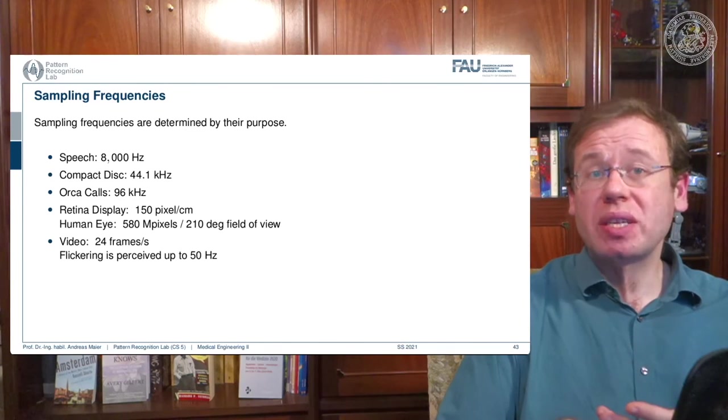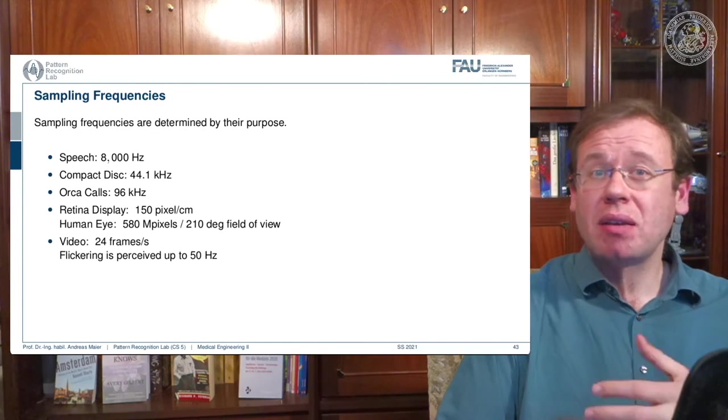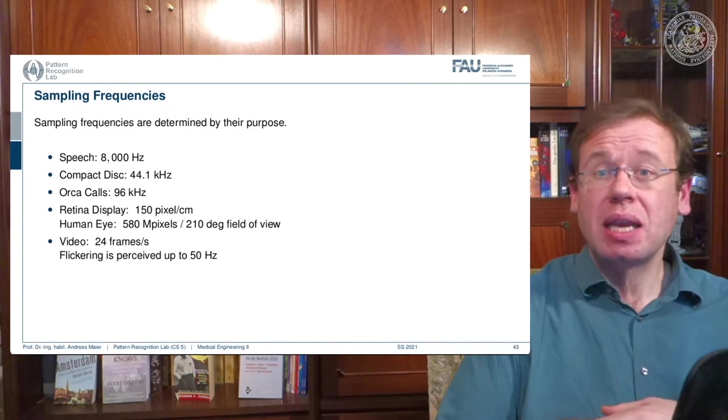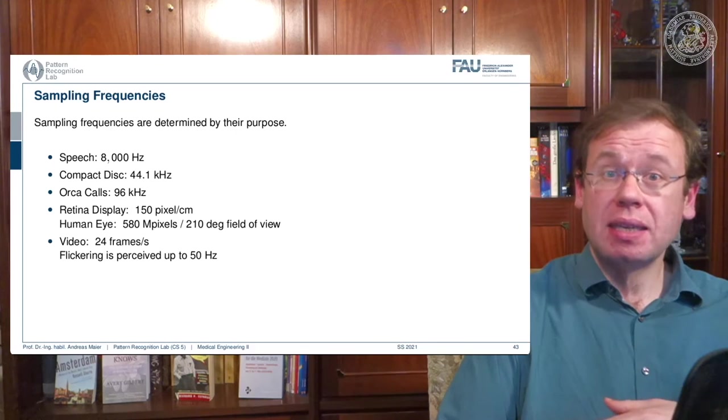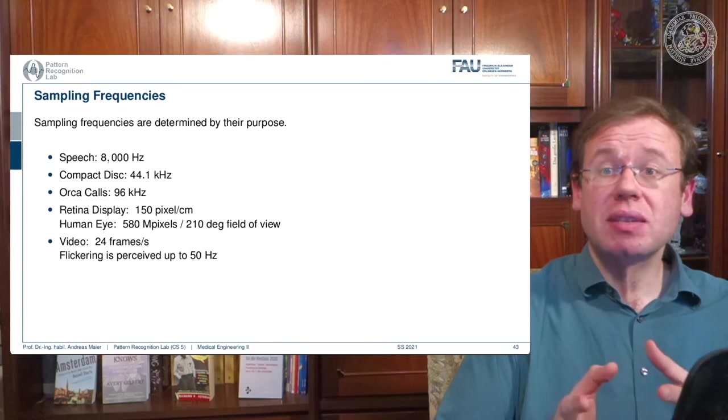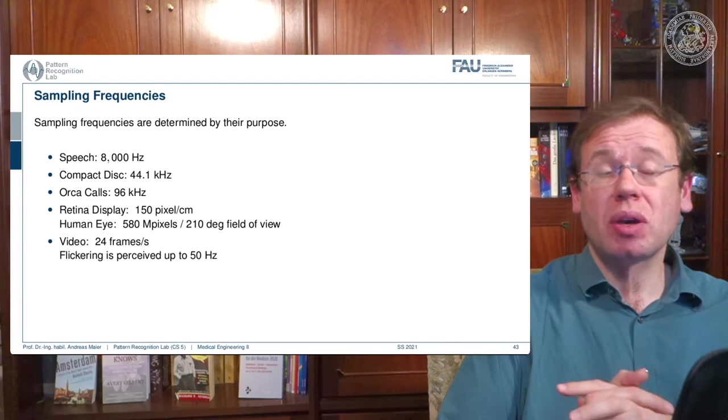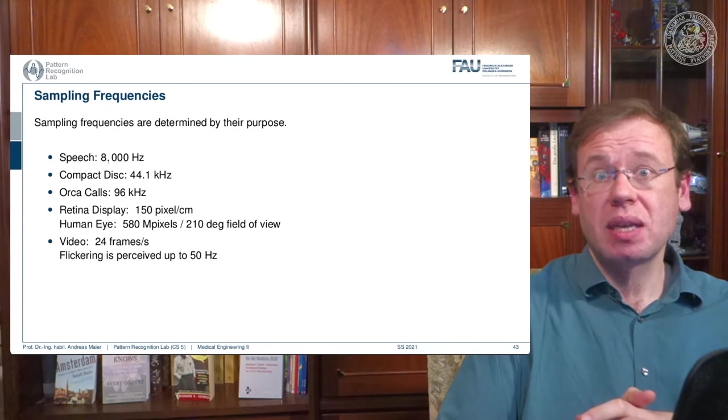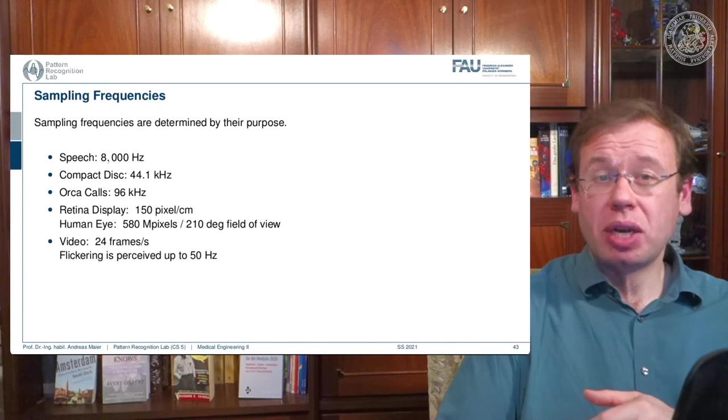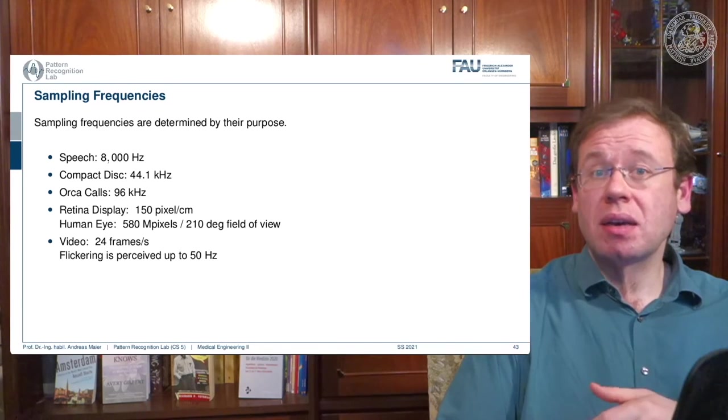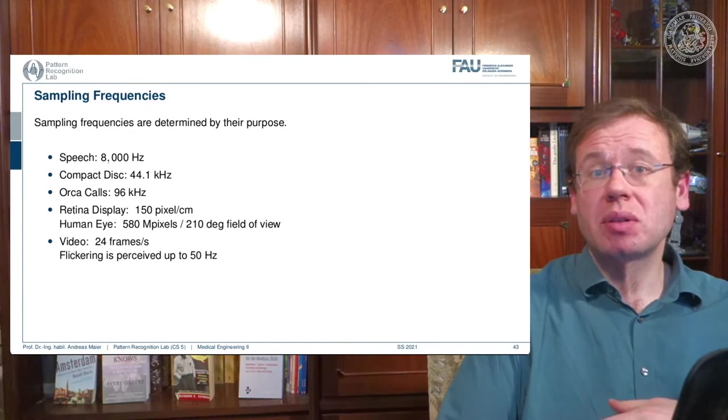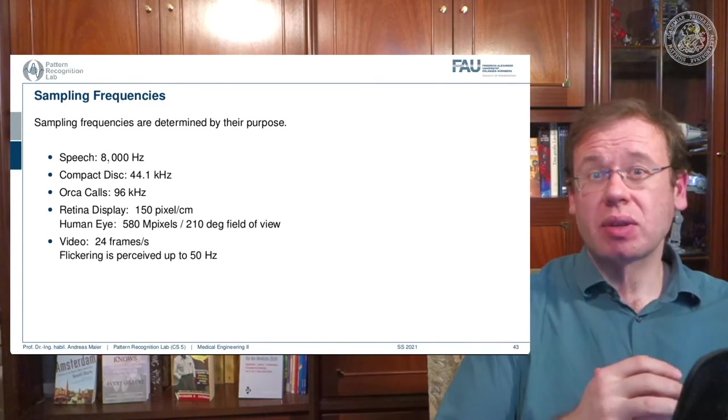Also for video, you typically have 24 frames per second that are perceived as a continuous video by humans. But again, your eye is not a camera system. You can still see flickering up to a frequency of 50 hertz. So if you want to have a completely flickering-free impression, you need a 100 hertz device in order to be able to get rid of any flickering effect.